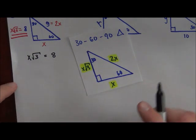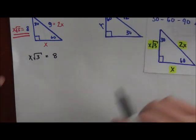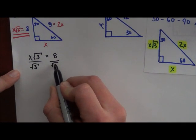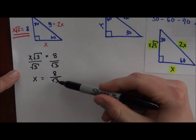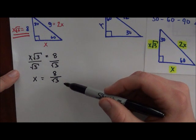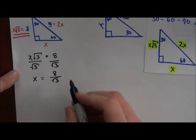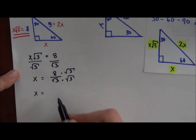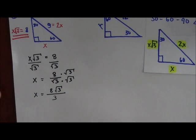Method one: divide both sides by √3, giving X = 8/√3. The problem is you cannot have a radical in the denominator of a fraction, so we rationalize the denominator by multiplying top and bottom by √3. That gives X = 8√3 / (√3 × √3) = 8√3 / 3.